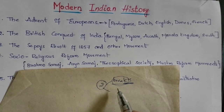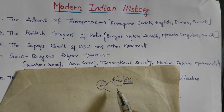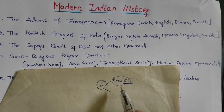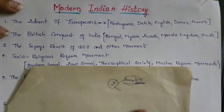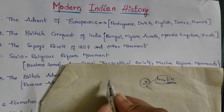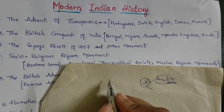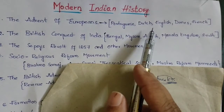First, we need to cover the minimum required content. Now we have modern Indian history. The modern history will start with the Europeans. They came to India to make trade and to make available items for commerce.